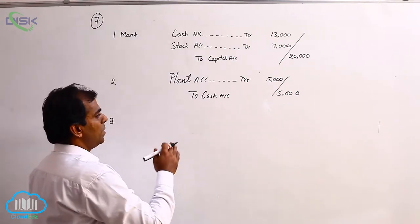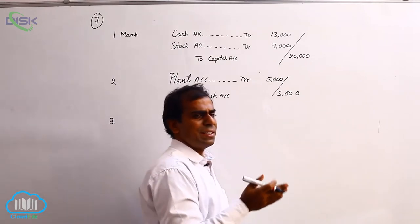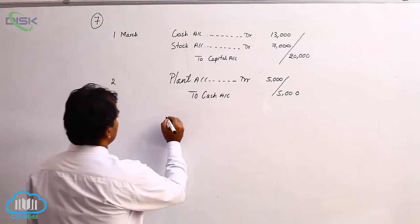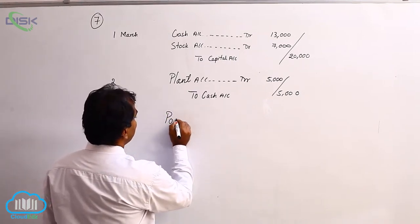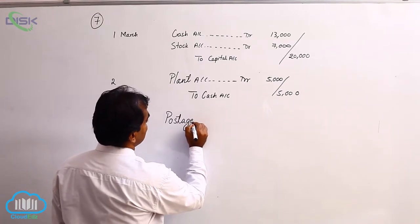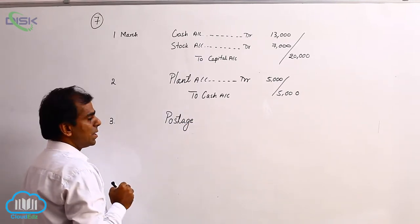So therefore the usage of this postal material is usually within one year. So therefore it is treated as a nominal account. So being a nominal account and we are buying it becomes expense. Or debit all expenses, the rule of nominal account says.